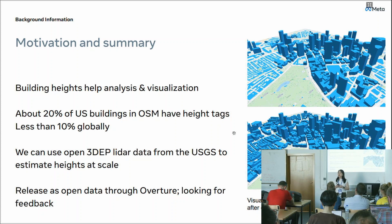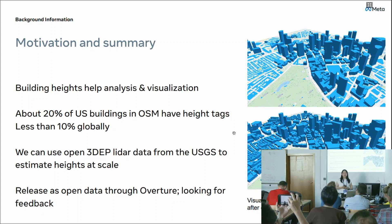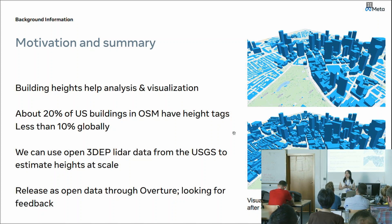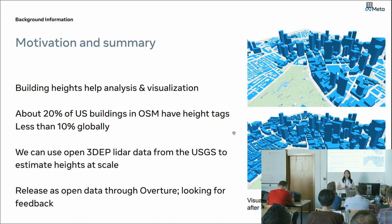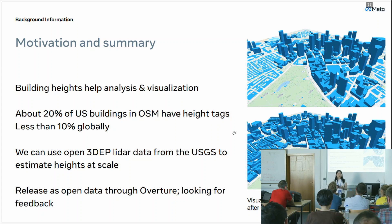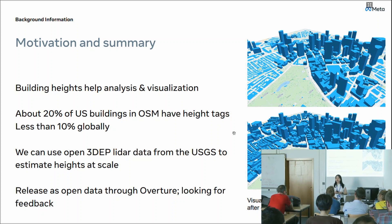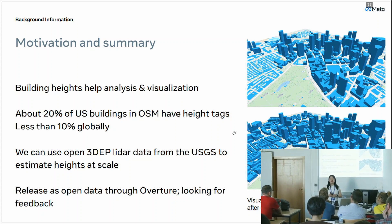With the increasing needs of 3D buildings, especially for a lot of Meta products, to build a 3D model in level of detail, building height is one of the important 3D characteristics that we need for analysis and visualizations. We first thought to use OSM data, but when we look at OSM data at the time we started this project, we were surprised to find that about 20% of US buildings are lacking height information, and when we check globally we find even less than 10% of buildings have height information.